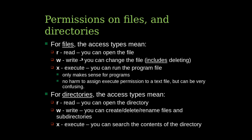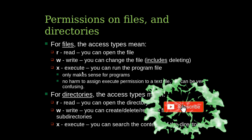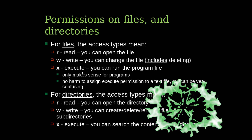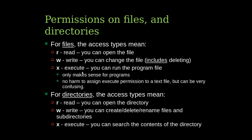Permissions have different meanings for files and directories. For files, r means the user can open the file, w means the user can write into the file, and x means the user can execute the file, such as .exe or .sh files. For directories, r means the user can open the directory, w means the user can add, delete, rename files or create subdirectories, and x means the user can search into the directory.